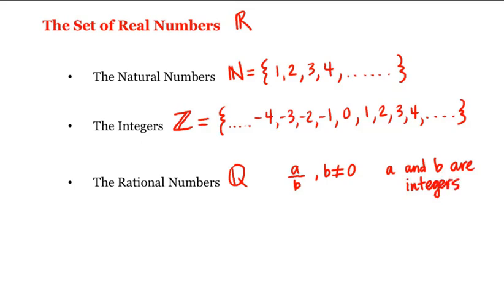Now the decimal representation of a rational number either terminates or repeats. For example, 1 divided by 2, this is a rational number, and its decimal representation is 0.5, and it stops or terminates. Whereas 1 divided by 3, which is also a rational number, has its decimal representation repeating. It doesn't stop, it repeats.